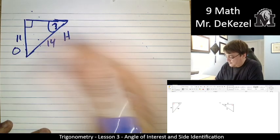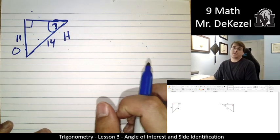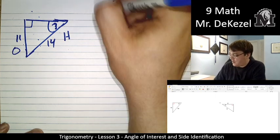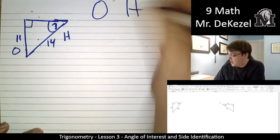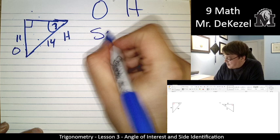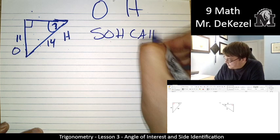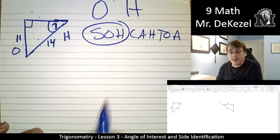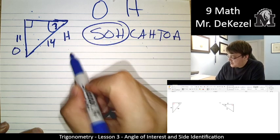That is opposite of it. So the two sides that we have information about are the opposite side and the hypotenuse. And if we look back at our acronym, SOH CAH TOA, opposite and hypotenuse means we're using sine.